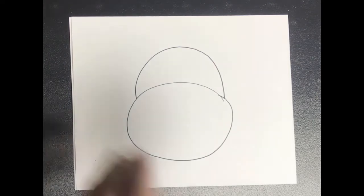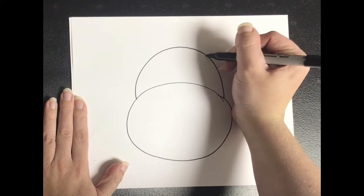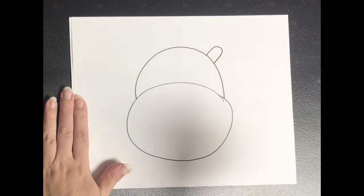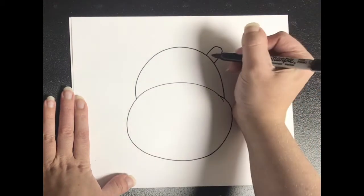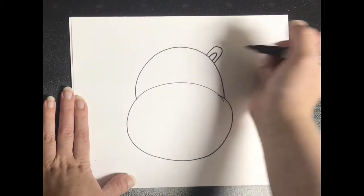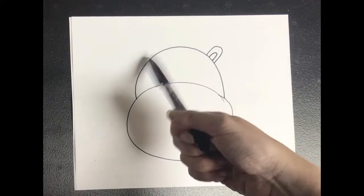Next we're going to give our hippo some ears. So I'm going to draw half of an oval on one side of the hippo. And I'm going to draw a larger half of an oval and then I'm going to draw a smaller one inside of that. So now I have one ear and then I'm going to do the same thing on the other side.